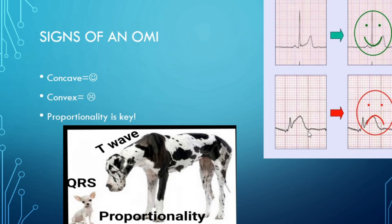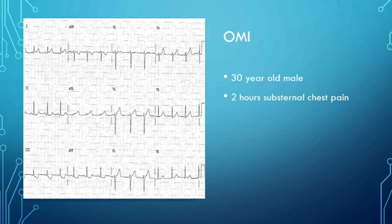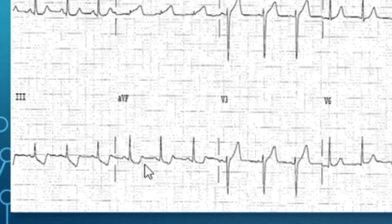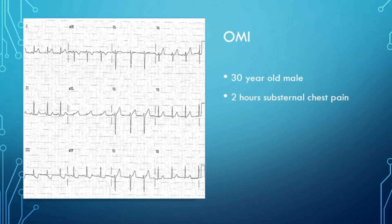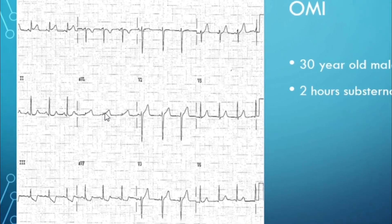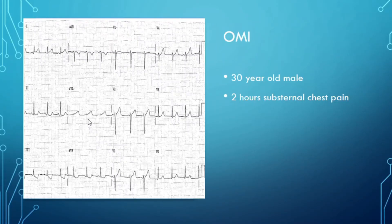Now let's get into occlusion MI identification with some cases. This is a 30-year-old male complaining of substernal chest pain. Direct your eyes to the inferior leads — 2, 3, and AVF. See that T wave inversion and depression? Lead 3's best friend and most reciprocal lead is AVL. Look at AVL — see that small QRS and that massive T wave? That is disproportionate: very small QRS, massive T wave. That is a hyper-acute T wave.